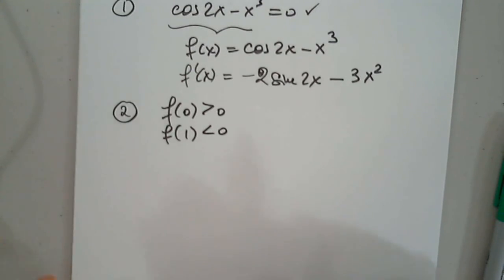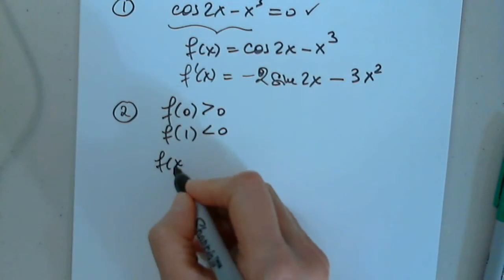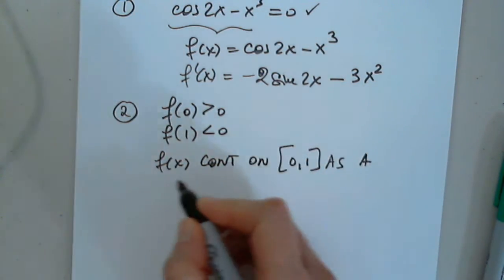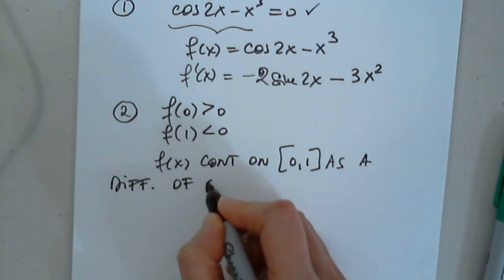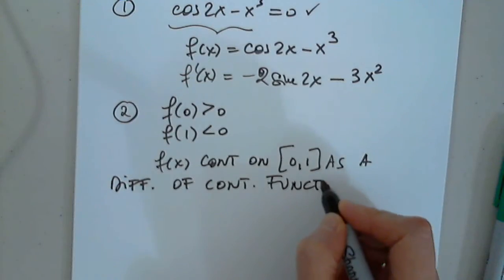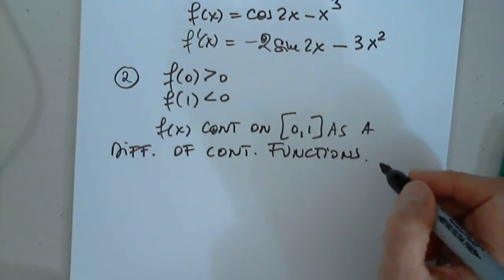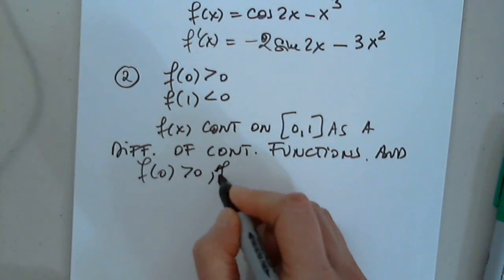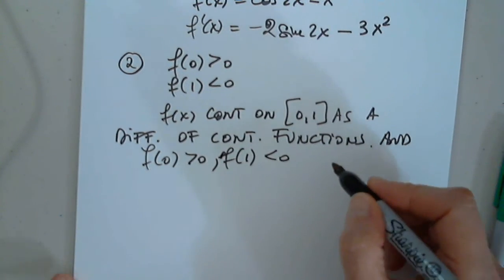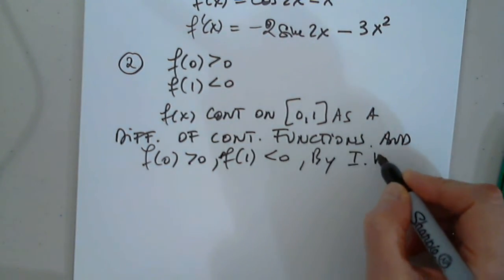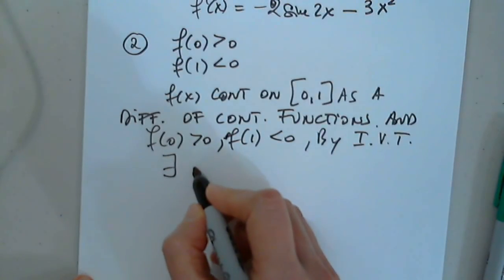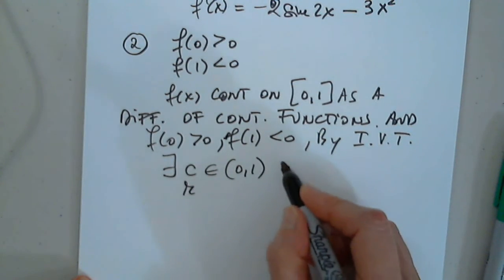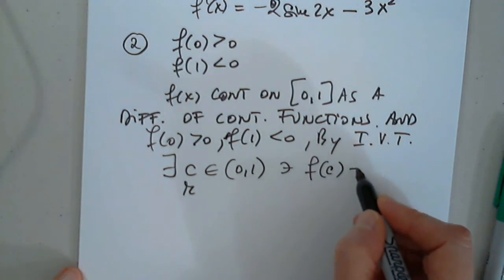So then I'll say f of x continuous on the interval 0, 1 as a difference of continuous functions. And f of zero positive, f of one negative, by intermediate value theorem. There exists a c or an r in the open interval 0, 1, such that f of c is 0.